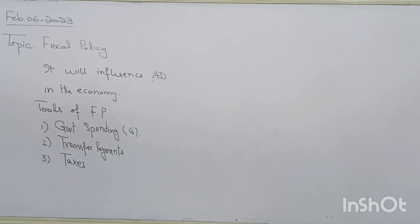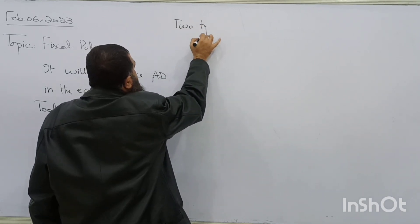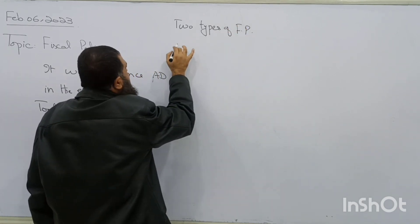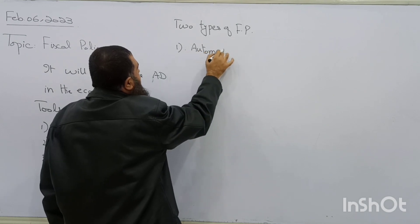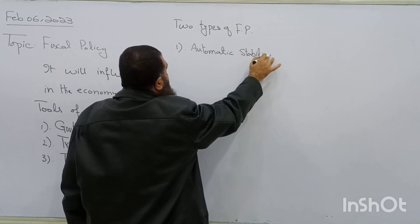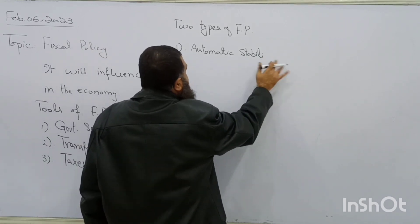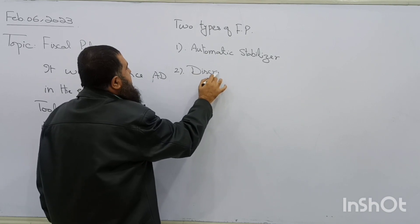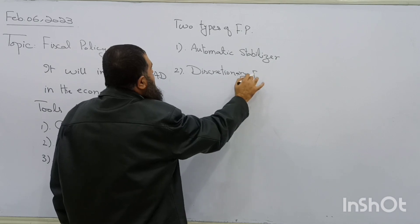There are mainly two types of fiscal policy. One is called the Automatic Stabilizer, and the other is called Discretionary Fiscal Policy.